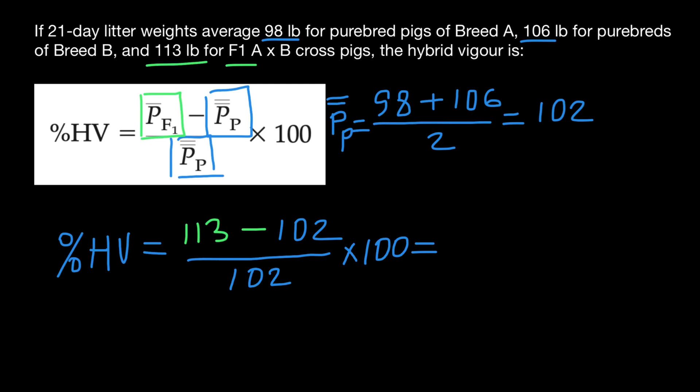And we are going to get 10.8%. This is going to be the hybrid vigor, which is going to be plus 10.8% if we compare with parental generation. So we have an increase in the performance of the hybrids, which we call hybrid vigor.